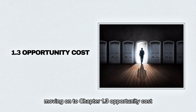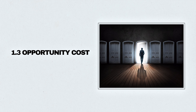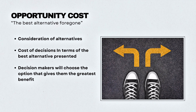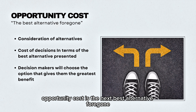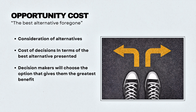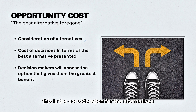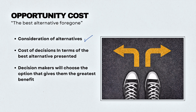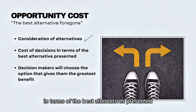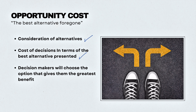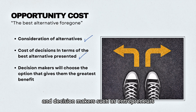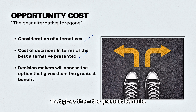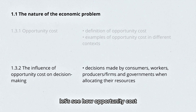Moving on to chapter 1.3: Opportunity Cost. Opportunity cost is the next best alternative foregone. This is the consideration for the alternatives presented in front of you — the costs of decisions in terms of the best alternatives. Decision makers such as entrepreneurs will choose the option that gives them the greatest benefits, for example, profits.